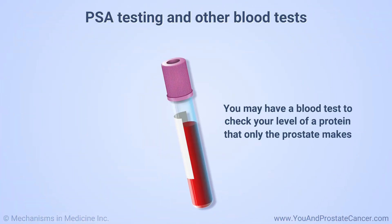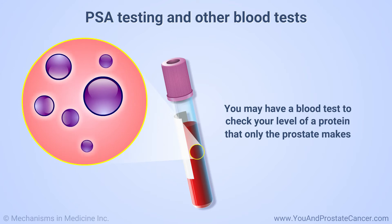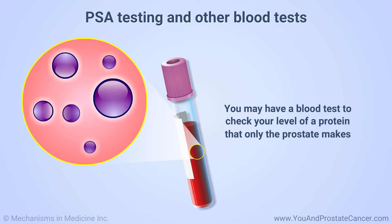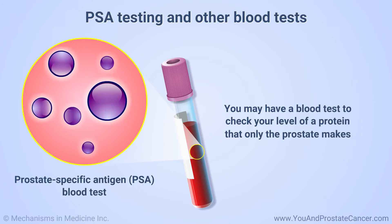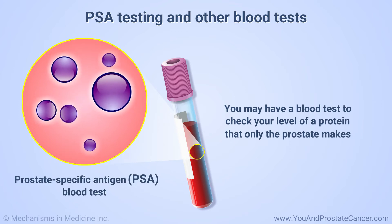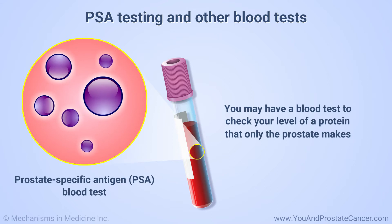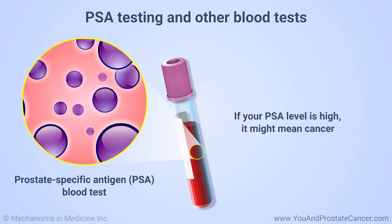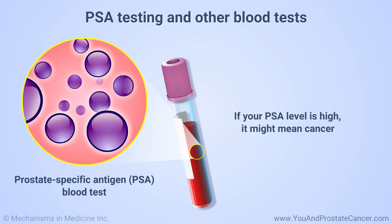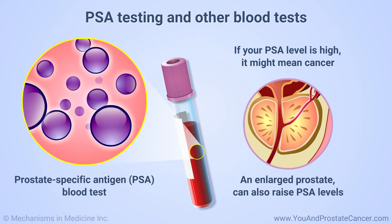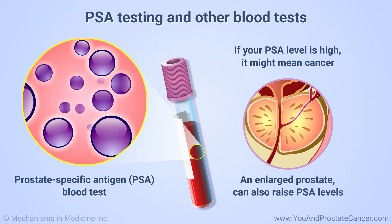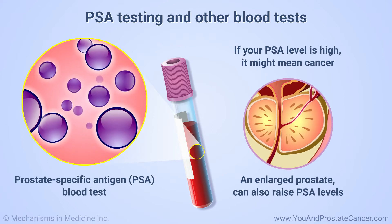You may have a blood test to check your level of a protein that only the prostate makes. This protein is called prostate-specific antigen, or PSA. If the level is high, it might mean cancer. However, some conditions, such as an enlarged prostate, can also raise PSA levels.